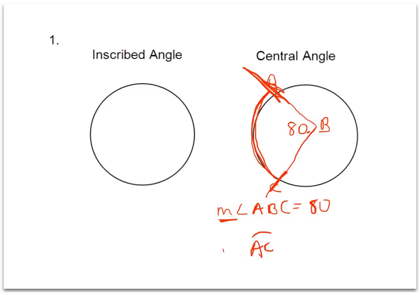And we learned that the measure of that intercepted arc is going to be equal to the central angle. So the central angle, 80 degrees, the intercepted arc AC is also 80 degrees.